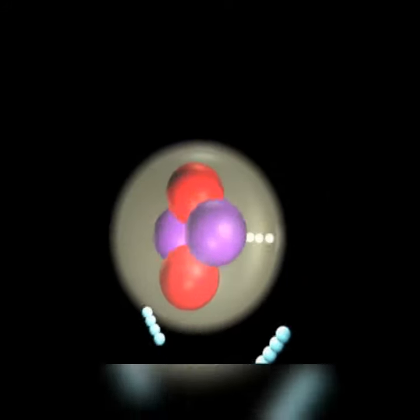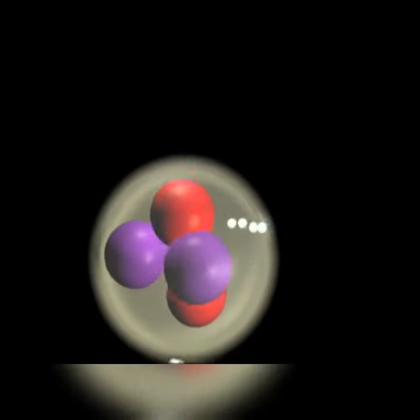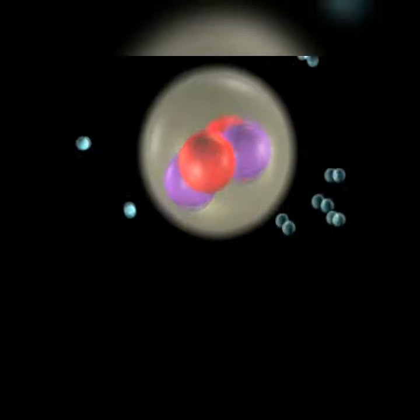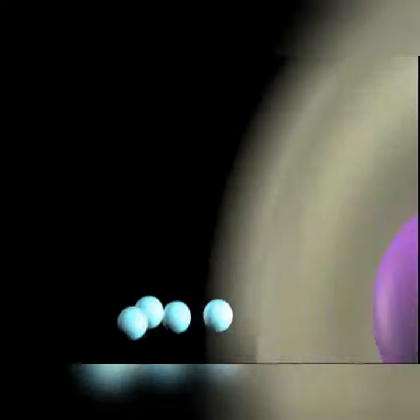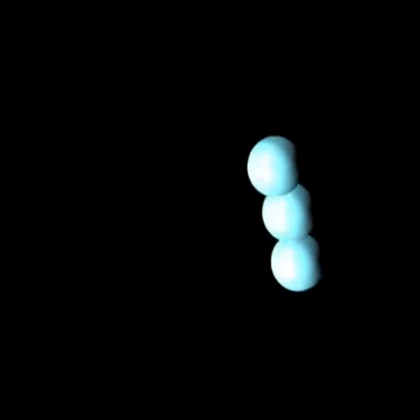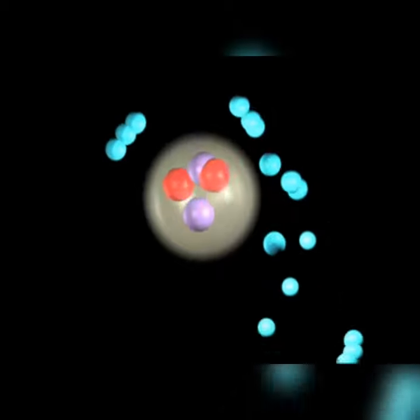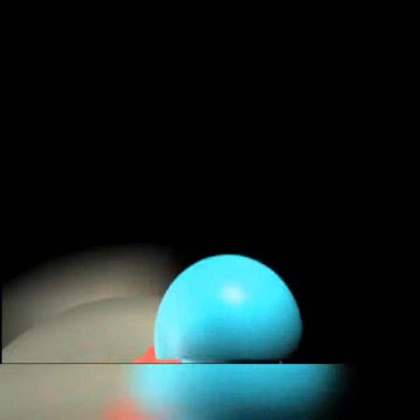This is equal to 4.02959 amu. Mass of helium atom is equal to 4.00388. Decrease in mass equals 4.02959 minus 4.00388, equal to 0.02568 amu. Therefore, energy released equals Delta M into 931 MeV, that is equal to 0.02568 amu into 931 MeV.